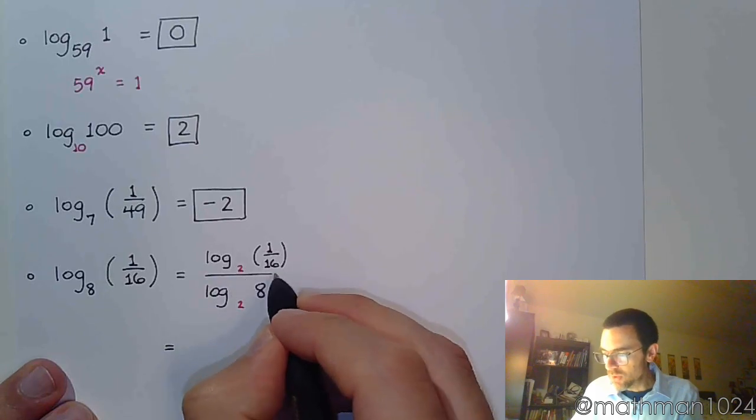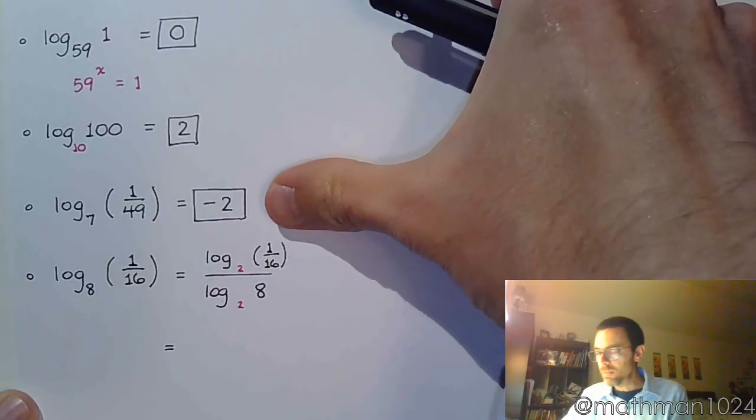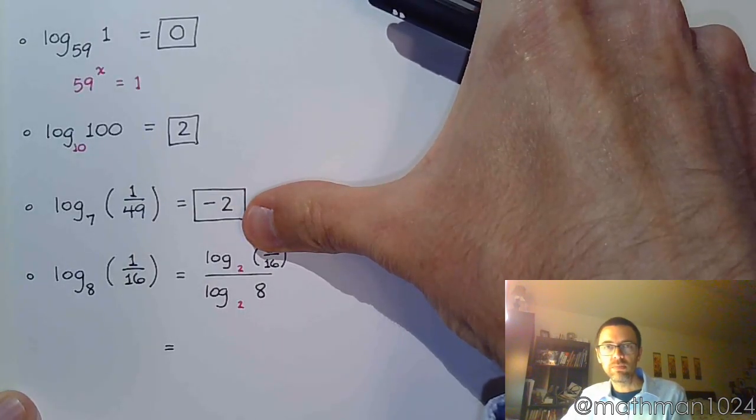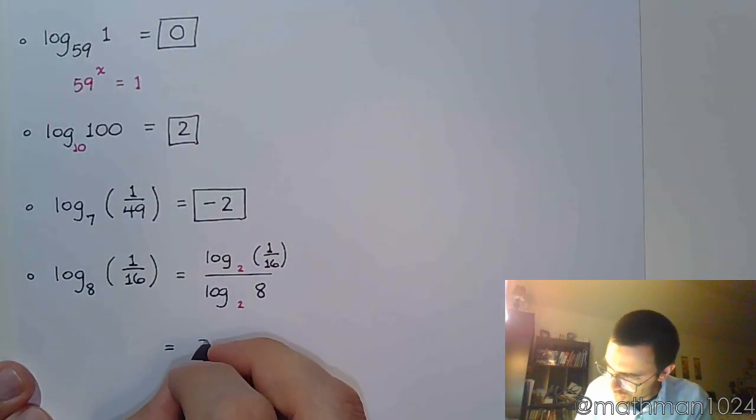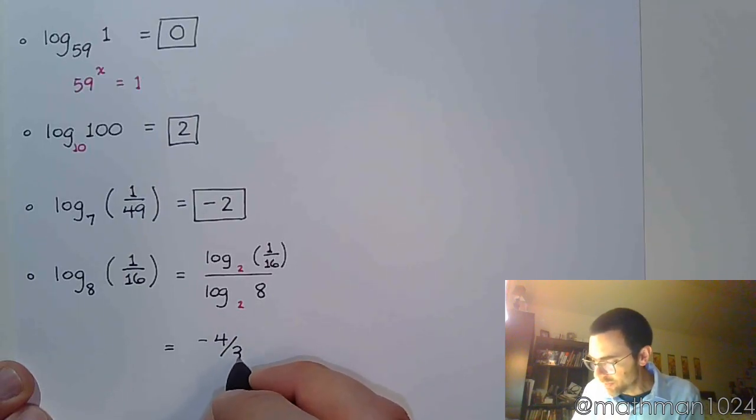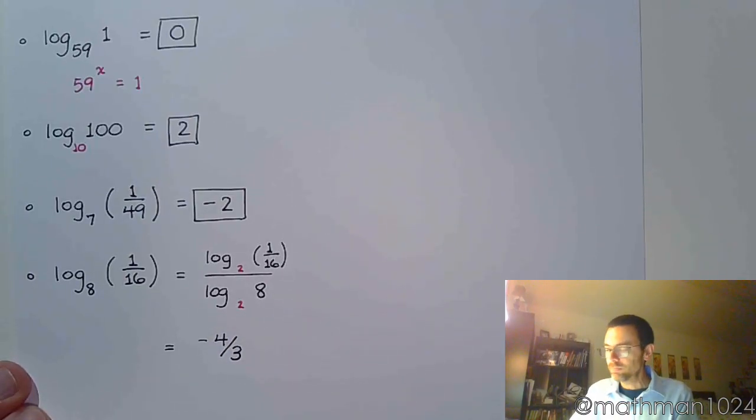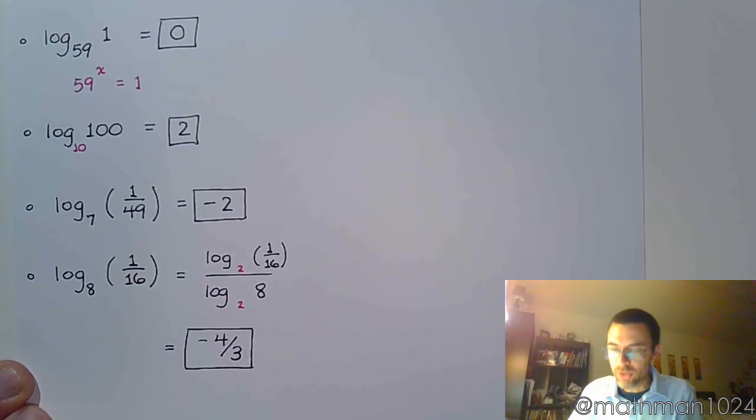And, then we work this out. What's the power of 2 that gives you... Well, it says 1 over 16, right? But, really, what's the power of 2 that gives you 16? Well, it's 4. But, since it's in the denominator, that means negative 4 over the power of 2 that gives you 8 is 3. And, there we go.